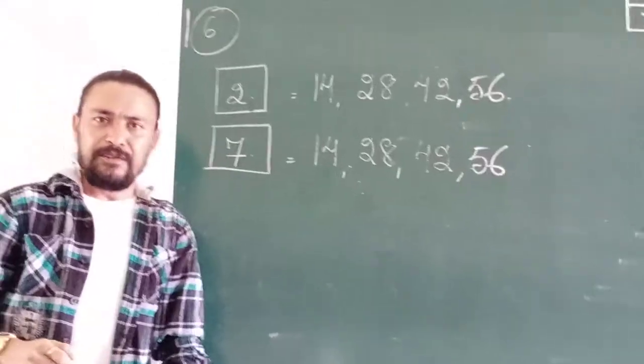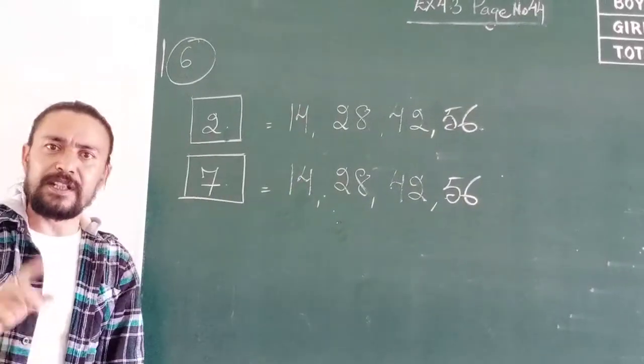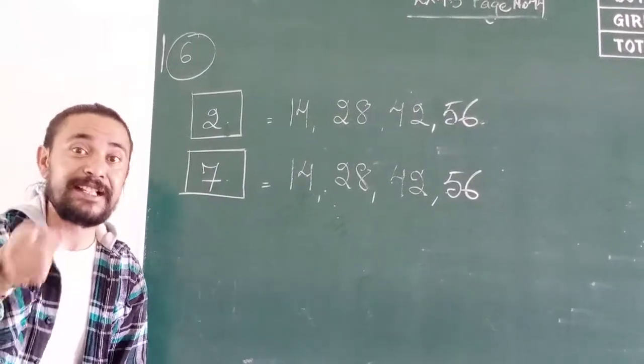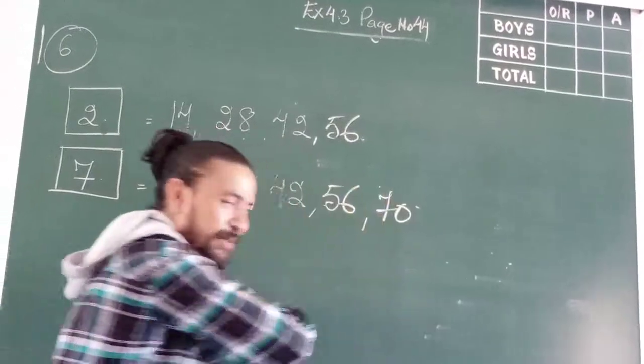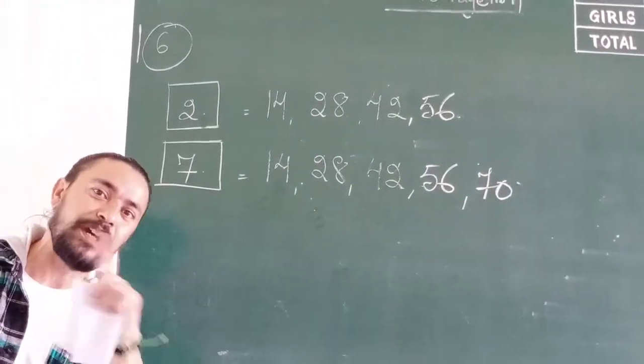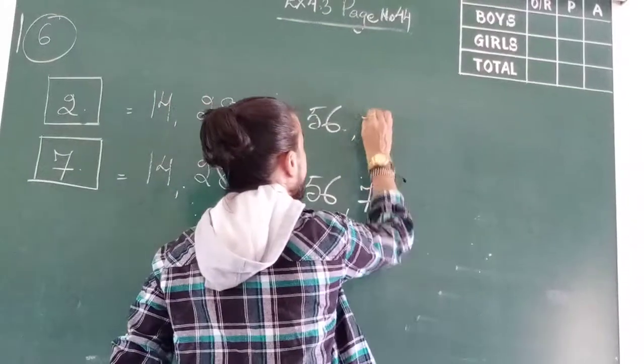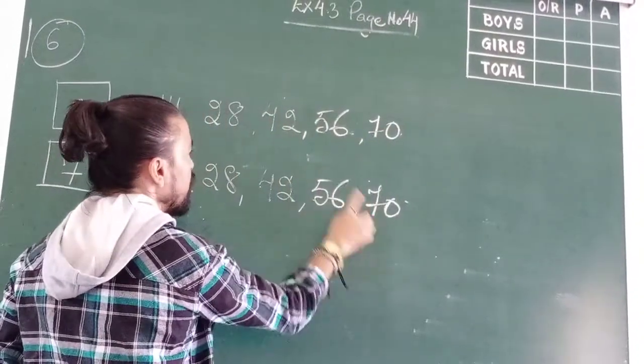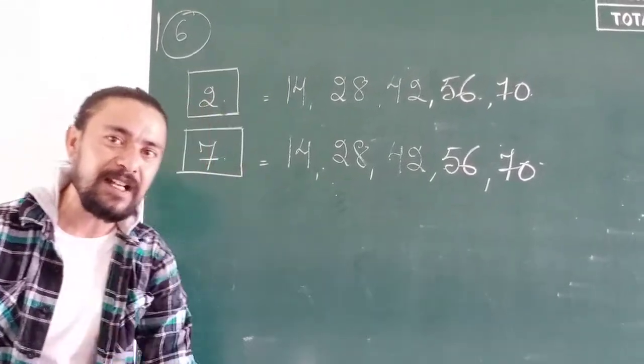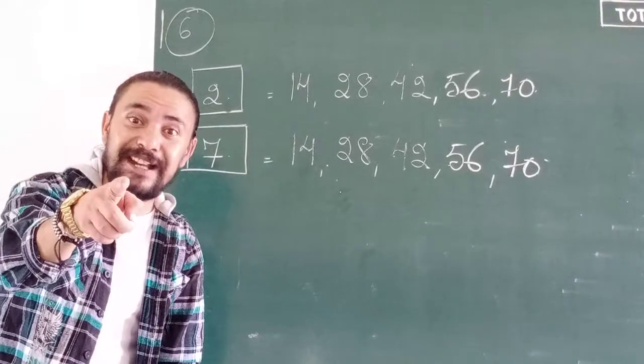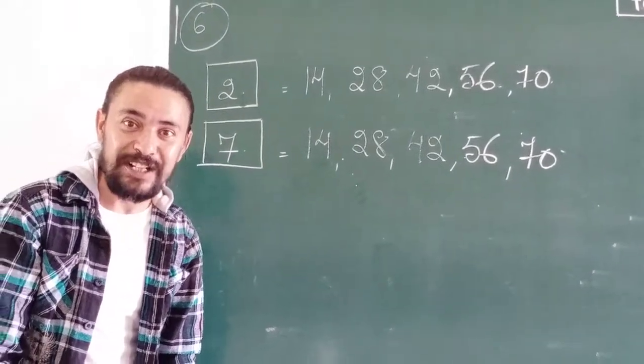Next number. 7, 8s are 56. 7, 9s are 63. 63 is an odd number, cannot. 7, 10s are 70. So 70 falls in 7 times table and 70 is divisible by 2, so it will also fall in 2 times table also. So 70. I have found 1, 2, 1, 2. I have to find 1 more. Are you all understanding?